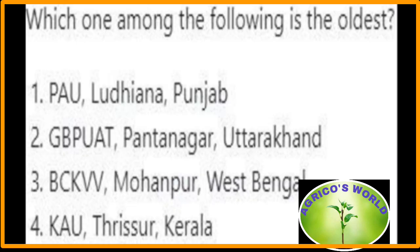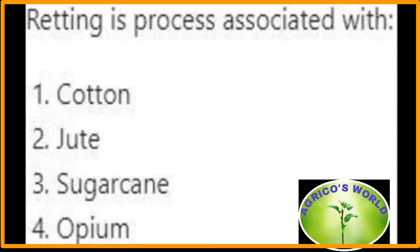Which one among the following is the oldest? G.B. Pant University of Agriculture and Technology located at Pantnagar, Uttarakhand is the oldest among these universities. Retting is the process associated with jute crop.